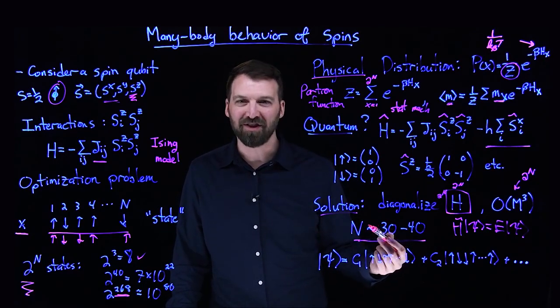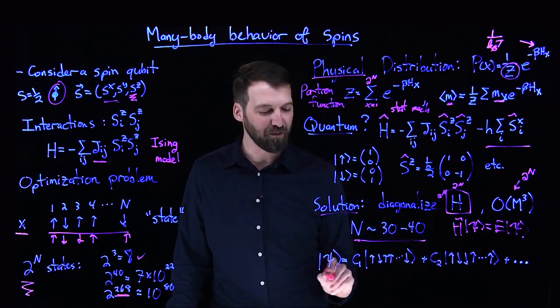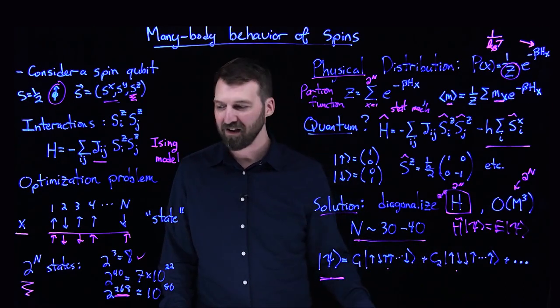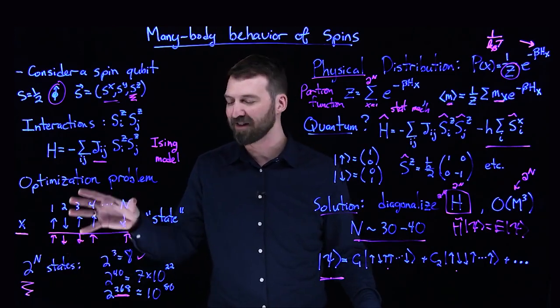What those diagonalization procedures give you is an energy eigenvalue and also a state wave function, which is made up of a linear superposition or linear combination of all of these possible snapshots I talked about.